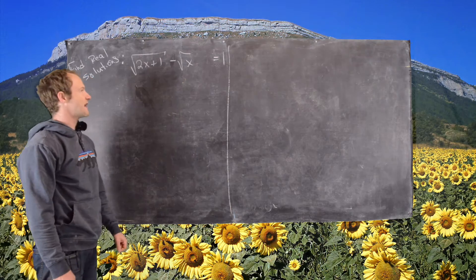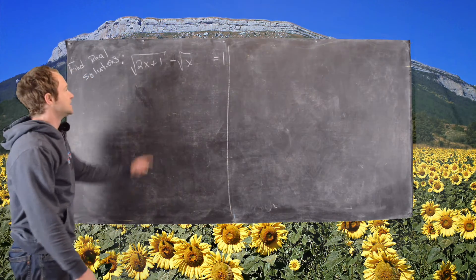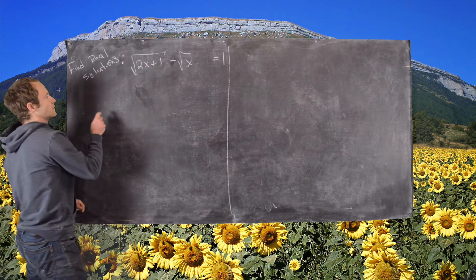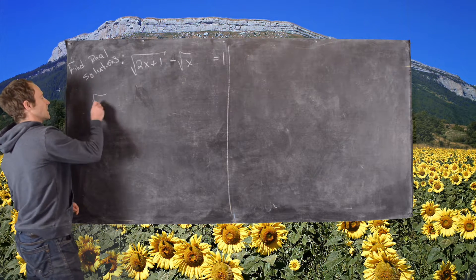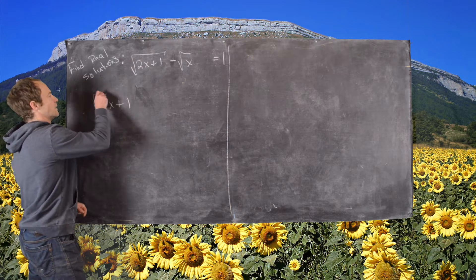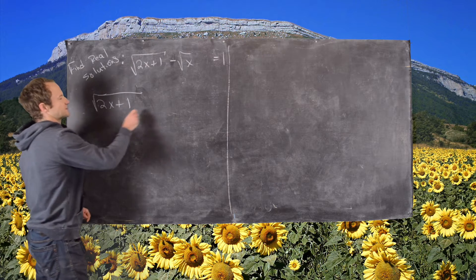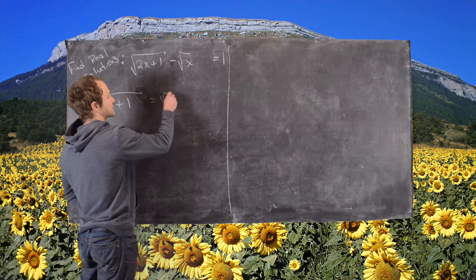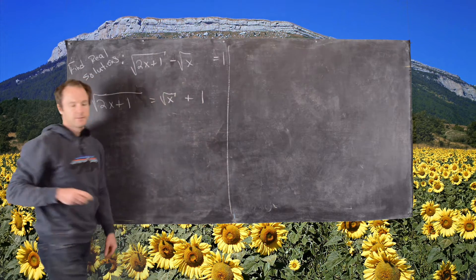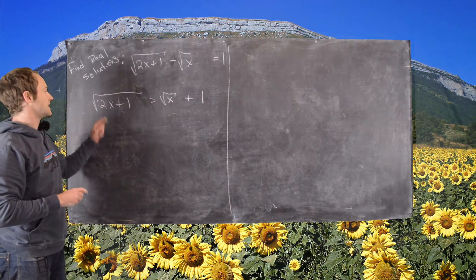The first thing I want to do is move the square root of x over to the right-hand side. That's going to give me this equivalent equation: square root of 2x plus 1 equals the square root of x plus 1. Now the next thing I want to do is get rid of the square roots as much as possible.